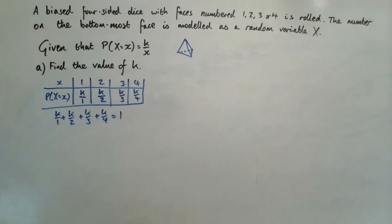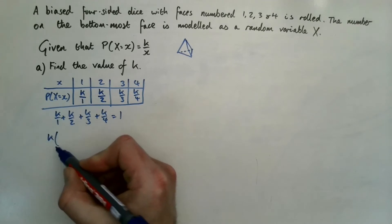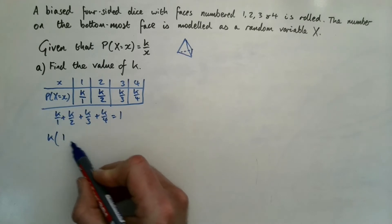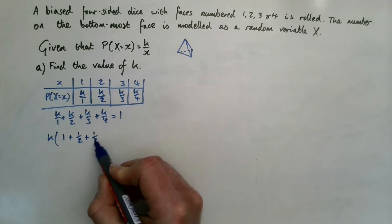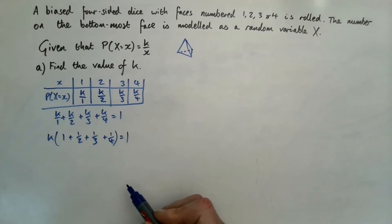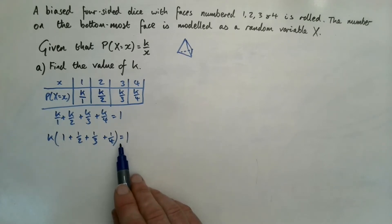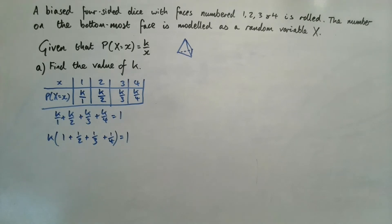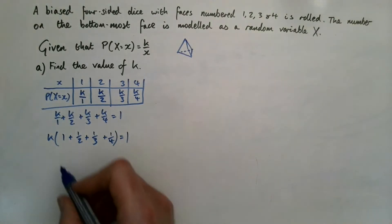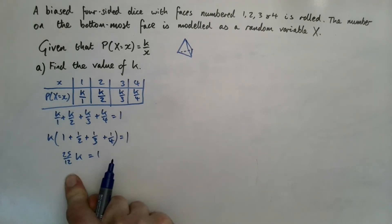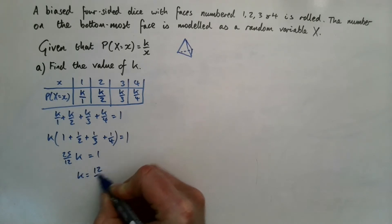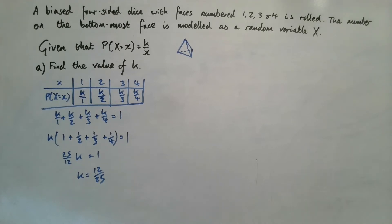To find k, all probabilities must add up to one: k/1 + k/2 + k/3 + k/4 = 1. Factoring out k gives k(1 + 1/2 + 1/3 + 1/4) = 1. Adding those fractions gives 25/12, so 25k/12 = 1, meaning k = 12/25.